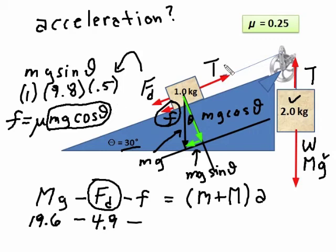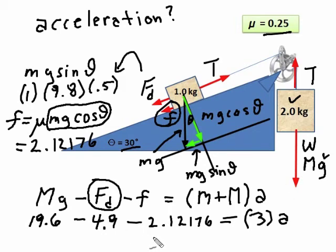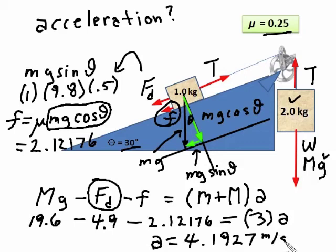So mg cos theta is the normal force. We put our numbers in: 0.25 times m (which is 1) times cos 30. When you work it out, you get 2.12176 — don't round off until the end. All of these are just straight numbers we can put into our calculator. The total mass is 3 times a. It's a very easy equation to solve: a equals 4.1927 meters per second squared. I'll use that number when I go to find the tension.